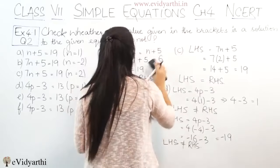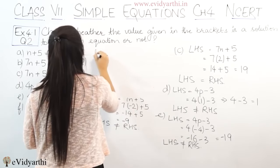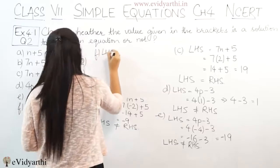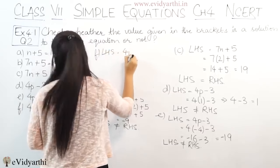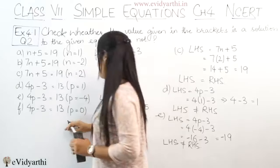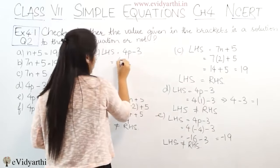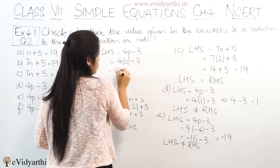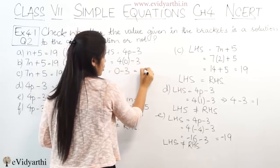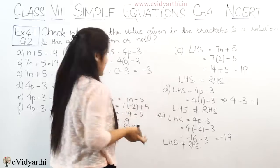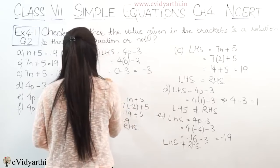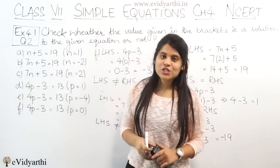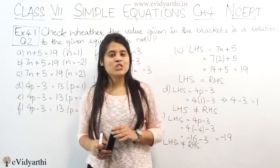Coming to the last part, part F. The left hand side is again 4p minus 3, and the value of p given is 0. So 4 into 0 minus 3 gives 0 minus 3, which is minus 3. Again left hand side is not equal to right hand side. So this was question number 2. Let's come to question number 3.